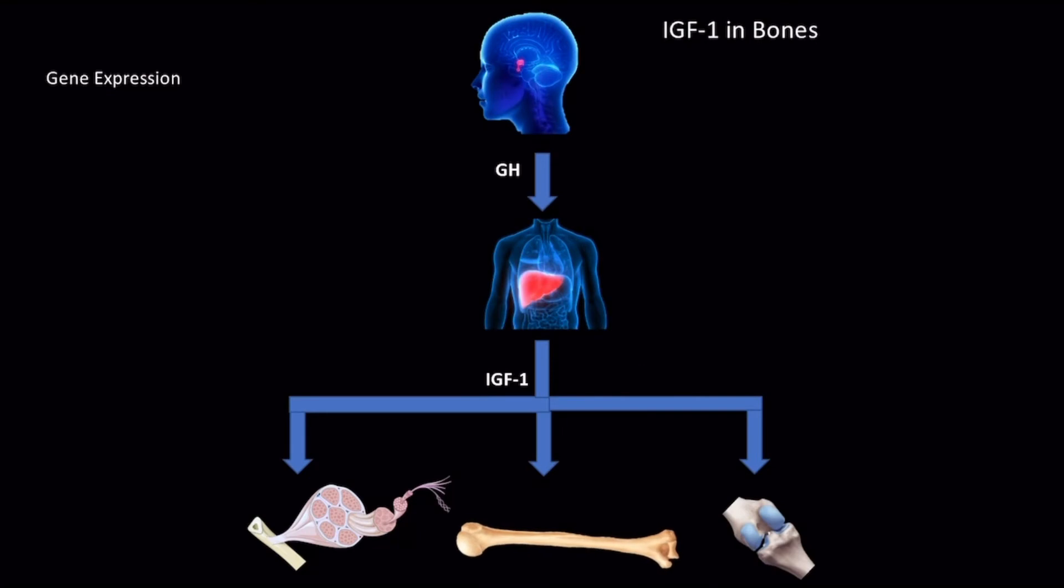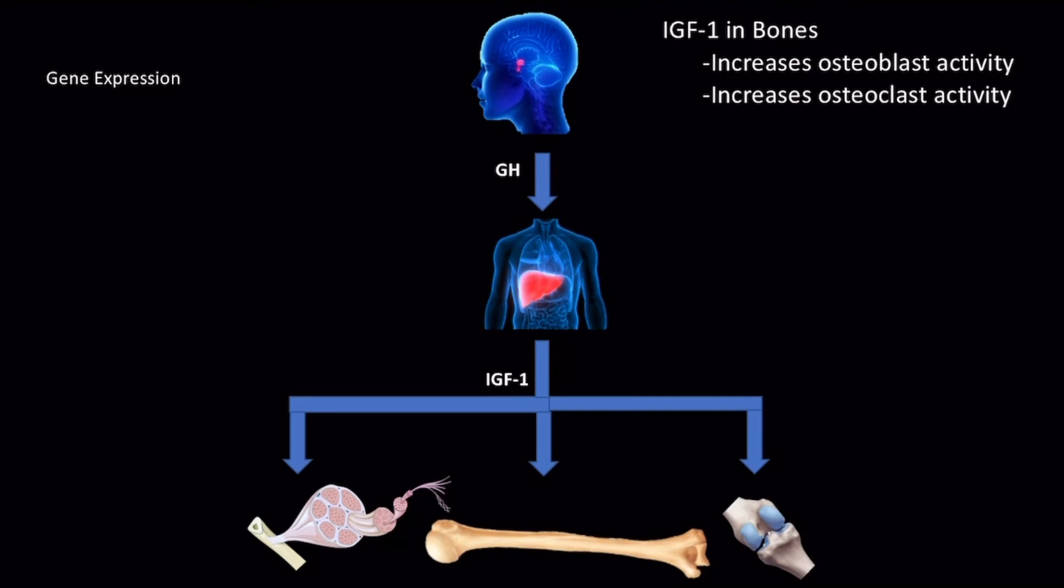In bones, IGF-1 causes an increase in the activity of osteoblasts, bone-forming cells, and osteoclasts, bone-remodeling cells, while also increasing the synthesis of many proteins inside these cells, particularly collagen fibers. The result is an overall increase in bone mass.